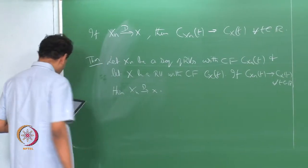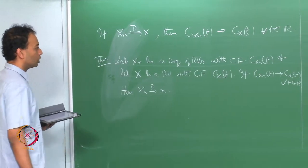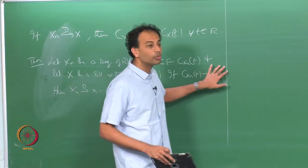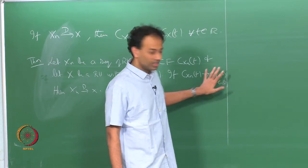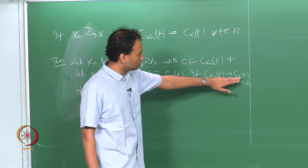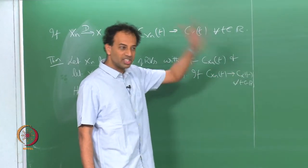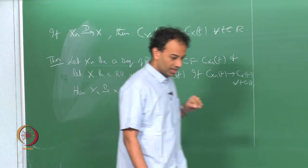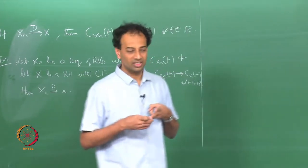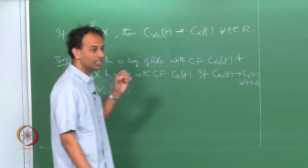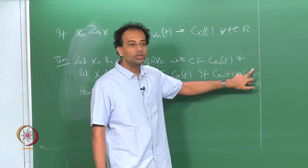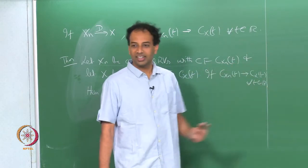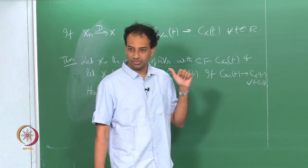There is a more refined theorem called the continuity theorem, which says you do not even have to check all three properties of the limiting function. It turns out it is enough to verify continuity of the limit function at t equal to 0. If your limit function is continuous at t equal to 0, you are guaranteed convergence in distribution.